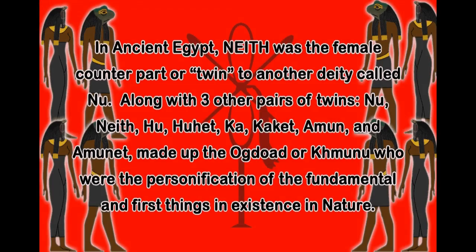In ancient Egypt, Neith was the female counterpart or twin to another deity called Nu. Along with three other pairs of twins — Nu and Neith, Hu and Huhet, Ka and Kakhet, Amun and Amunet — they made up the Ogdoad, or Khemenu, who were the personification of the fundamental and first things in existence in nature.